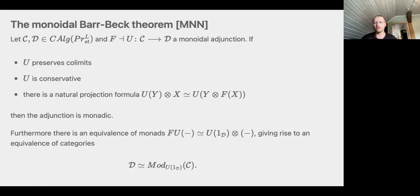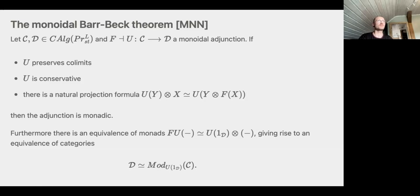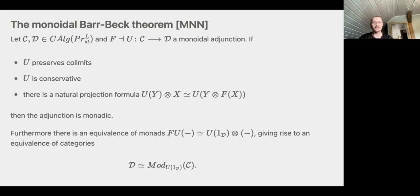This is a recognition theorem that allows us to recognize when a category is actually equivalent to modules over something reminiscent of the unit object. In the spirit of 'who is a module?' — you can ask directly, giving a category an adjunction and checking a small list of properties.